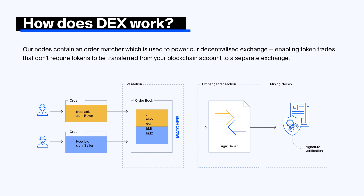It is also possible to get WAVES tokens not only on exchanges but by mining blocks. The WAVES blockchain uses a Leased Proof-of-Stake consensus. The probability of becoming a block validator is proportional to the total amount of tokens attracted from leasers. With each validated block, the miner receives a reward generated from transaction fees and mining rewards.